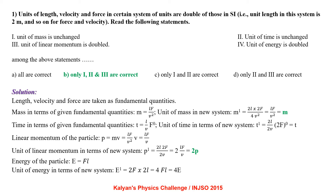Time in terms of the given fundamental quantities: T equals L over V times F to the power 0. The unit of time in the new system, T dash, equals 2L divided by 2V times 2F to the power 0, which comes out to be T. So the unit of time is also unchanged.